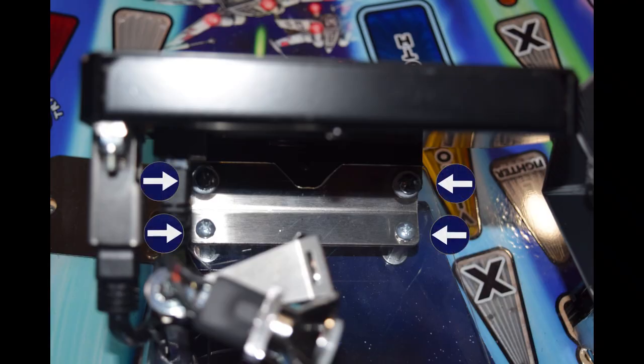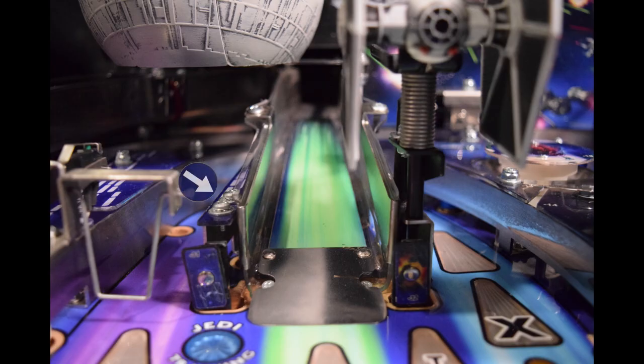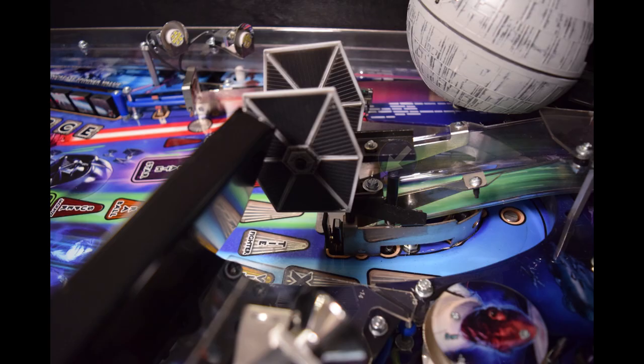In order to install the air ball protector, we will need to remove some hardware. Here is a look at the hardware you will need to remove that is located just behind the monitor. The air ball protector will sit just underneath the washers located here. You will also need to remove the two screws located here along with the TIE Fighter to install the air ball protector.